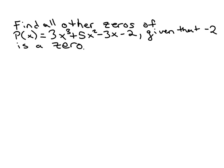All right, here's an example where we're given a polynomial and we're given one of the zeros of the polynomial and we're supposed to use that to find all the other zeros.